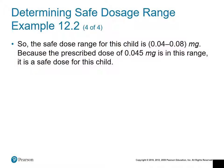We've now established the safe dosage range for this child who weighs 40 kilograms: the dose should be between 0.04 and 0.08 milligrams. The original order was 0.045 milligrams, which is between 0.040 and 0.080 milligrams, so it is within the safe range and the dose is safe for this child.